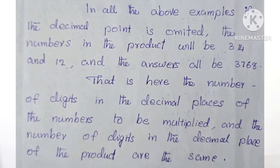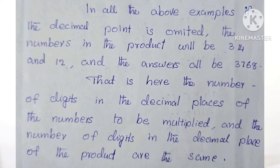In all the above examples, if the decimal point is omitted, the numbers in the product will be 314 and 12, and the answers will be 3768. Here, the number of digits in the decimal places of the numbers to be multiplied and the number of digits in the decimal place of the product are the same.